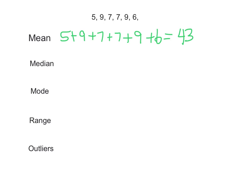So now we need to count up how many numbers we have: 1, 2, 3, 4, 5, 6. And we're going to divide this number by 6. So 43 divided by 6 gives us 7.16 repeating, and if we round that, that would be 7.2 for our mean.